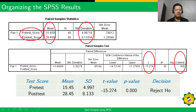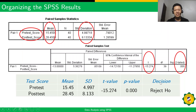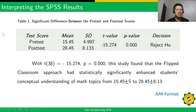For the pre-test and post-test scores, the mean values are read from the output and rounded to two decimal places. The standard deviation values are also copied and rounded to three decimal places. The computed T statistic is negative 15.274. The probability value — labeled SIG in SPSS — is 0.000. Since the p-value is less than the 0.05 level of significance, we reject H0.